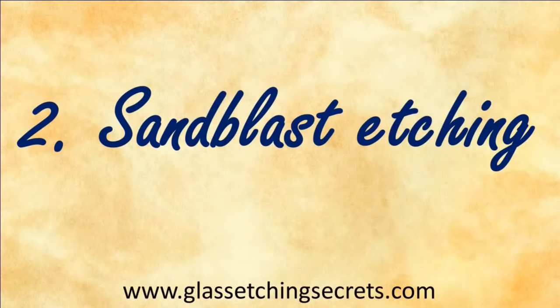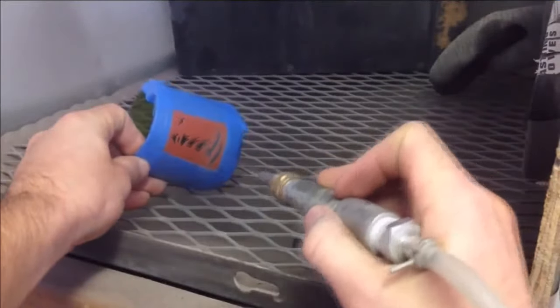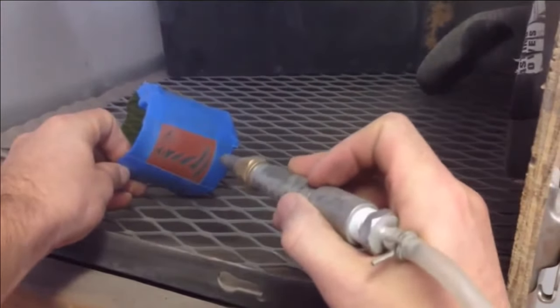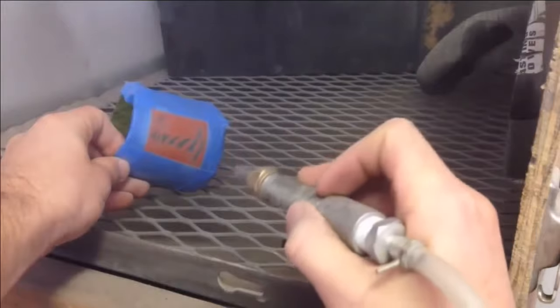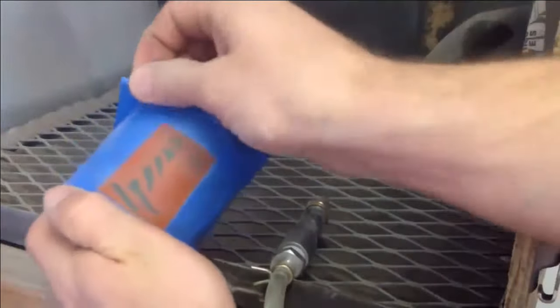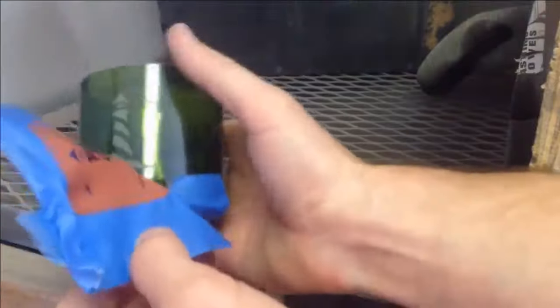For the second example, if you want to use these stencils with a sandblaster to etch your glass, it's best to use a fine abrasive such as 220 grit and/or light air pressure. That's the best way to ensure these stencils will hold up. Now with the sandblaster on, simply spray over the stencil in sweeping motions, and then pull off your stencil just like you did before.